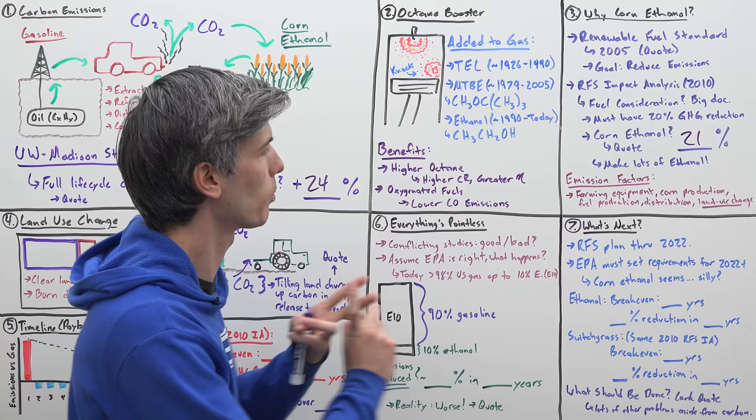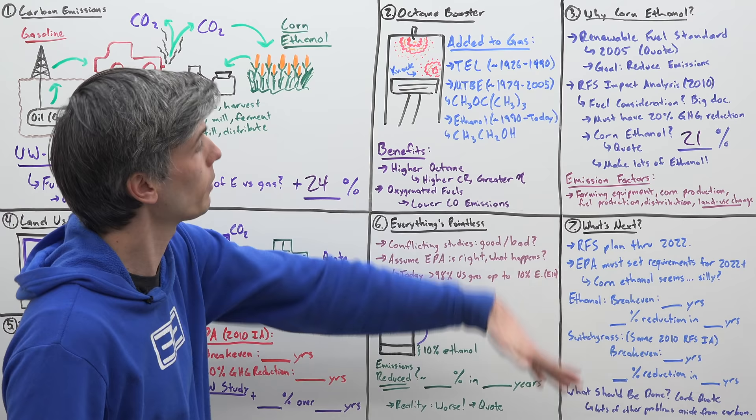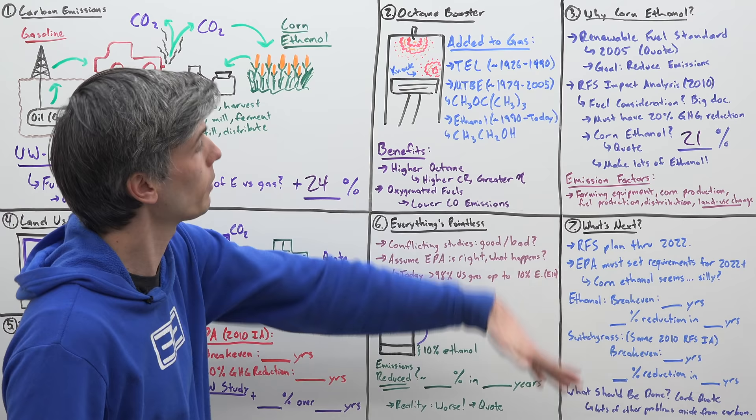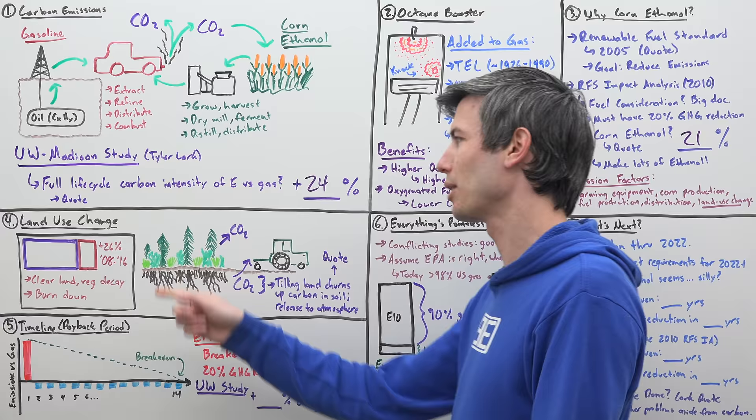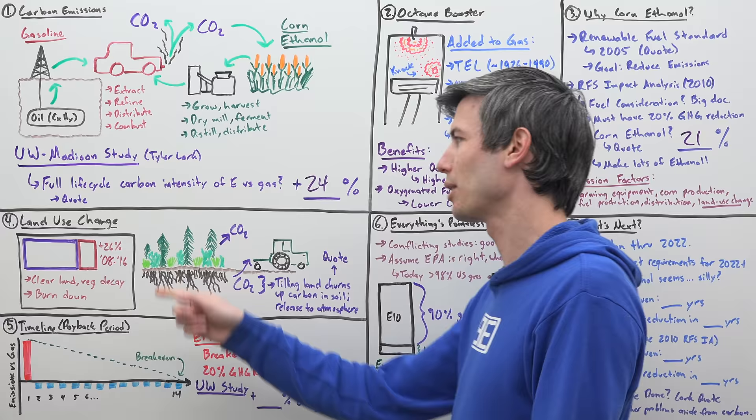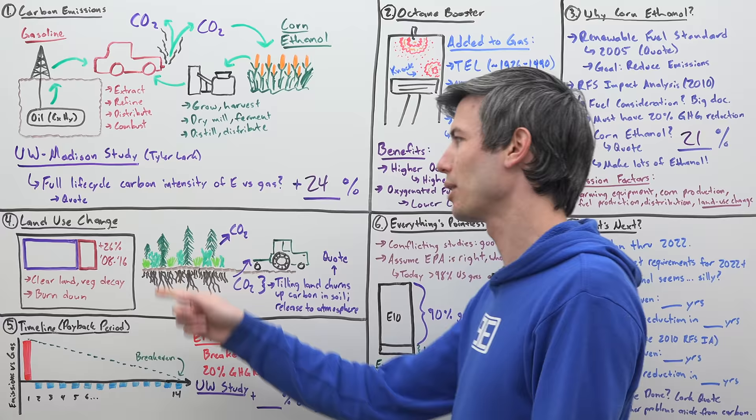Well, you've got the farming equipment, you've got the production of the corn, you've got fuel production, distilling all of that corn into alcohol that you can then use as ethanol, distributing it, and then land use changes. And this is one of the really big factors changing land in order to grow corn on it. So here's how that big ticket item of land use change works.